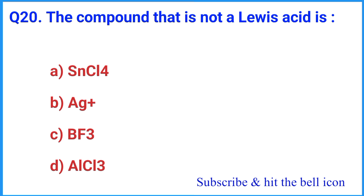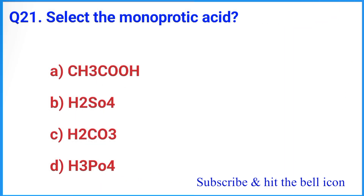Question number 20: The compound that is a non-noble acid is — the correct answer is option A: SnCl4. Question number 21: Select the monoprotic acid — the correct answer is option A.